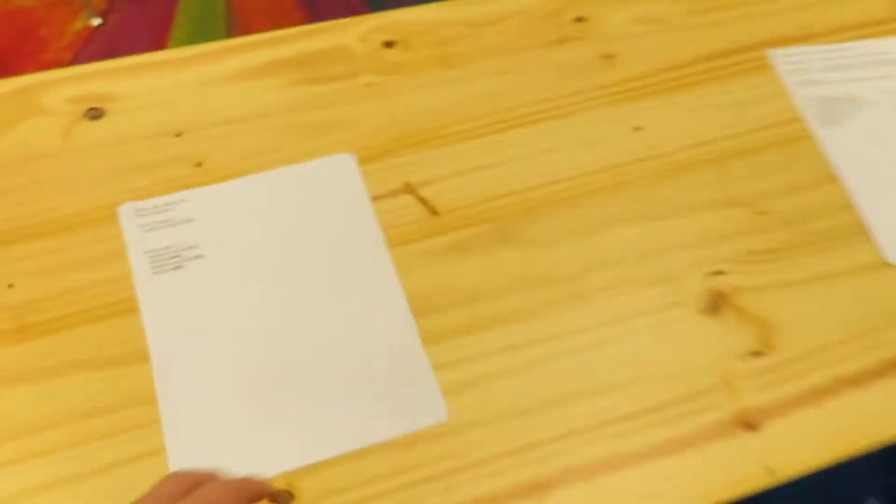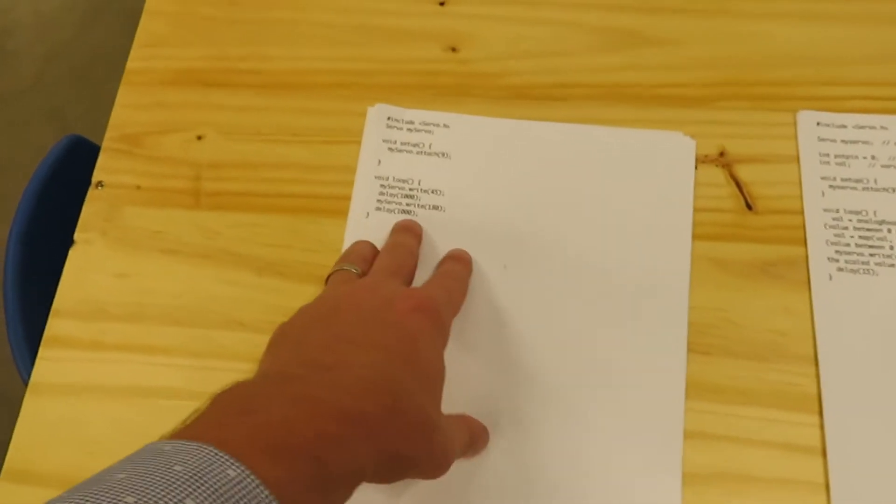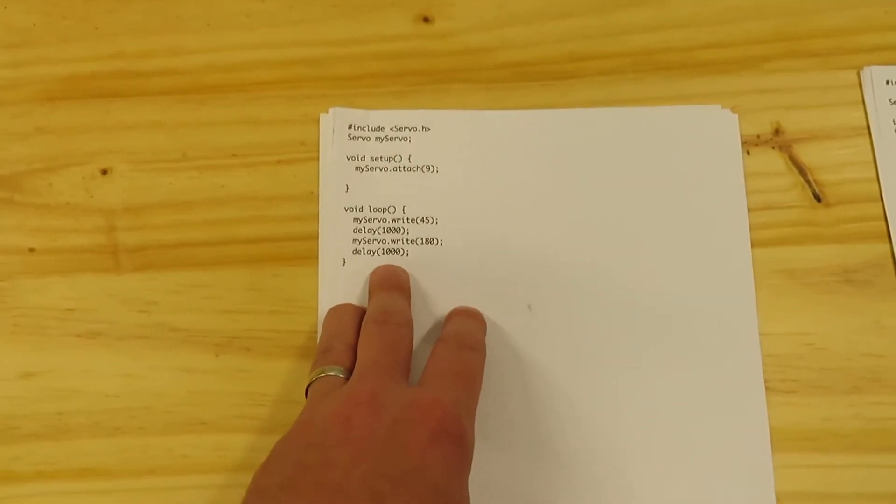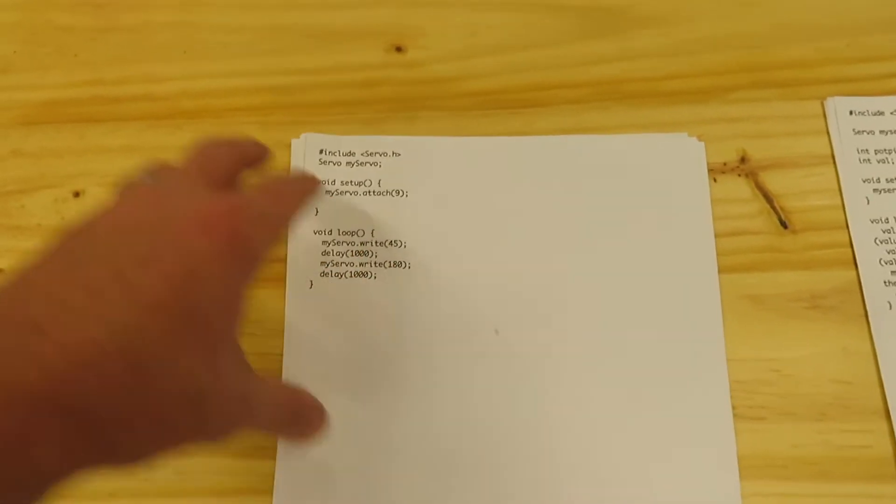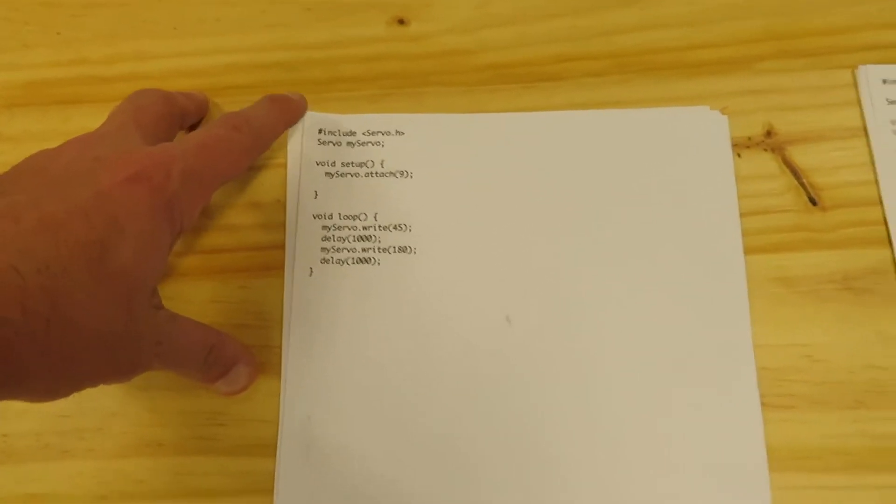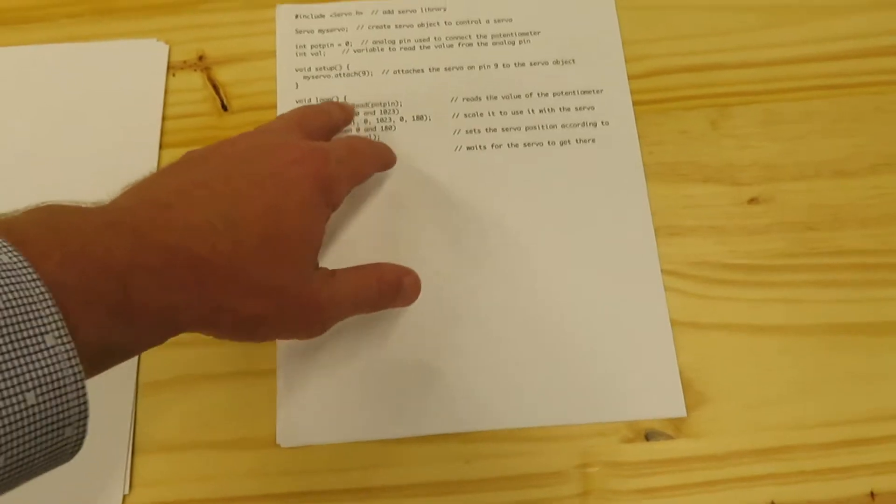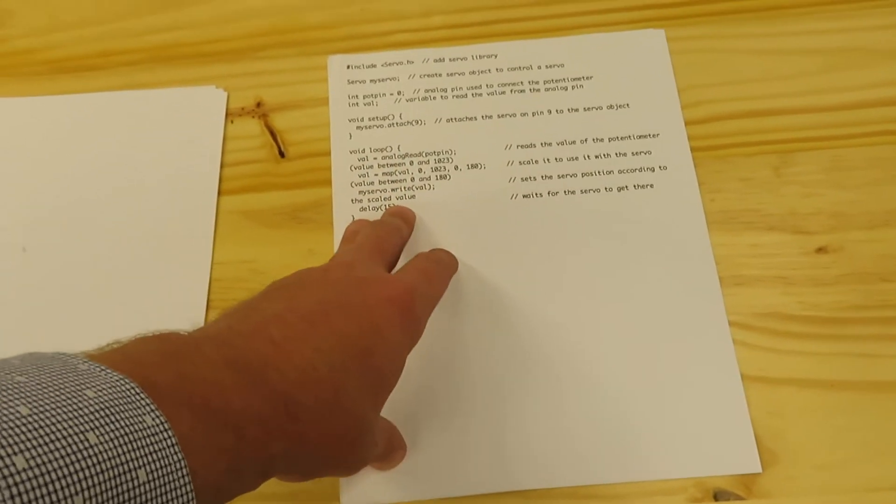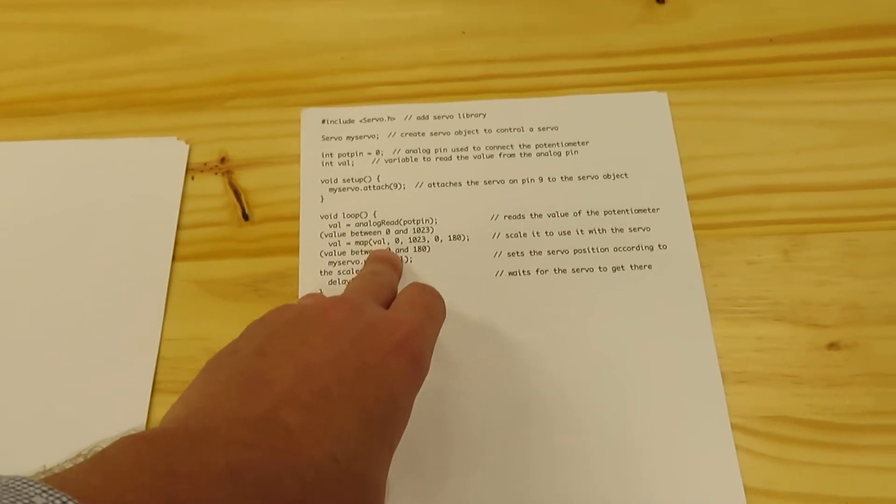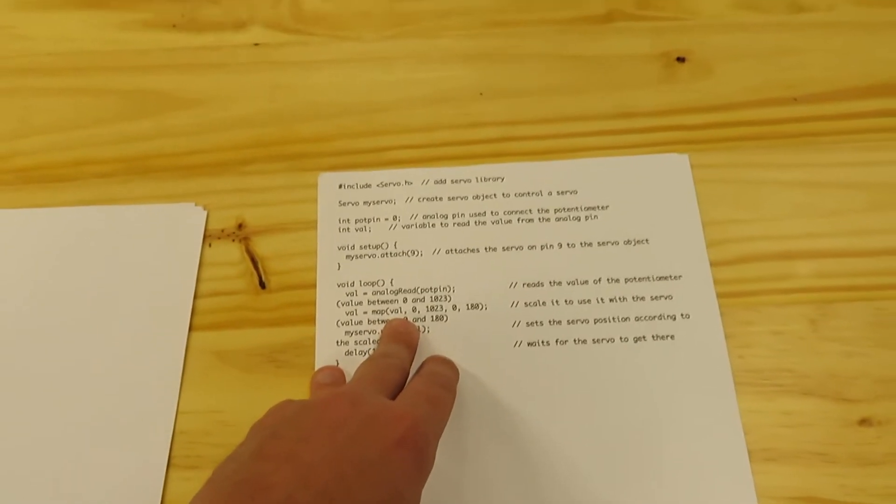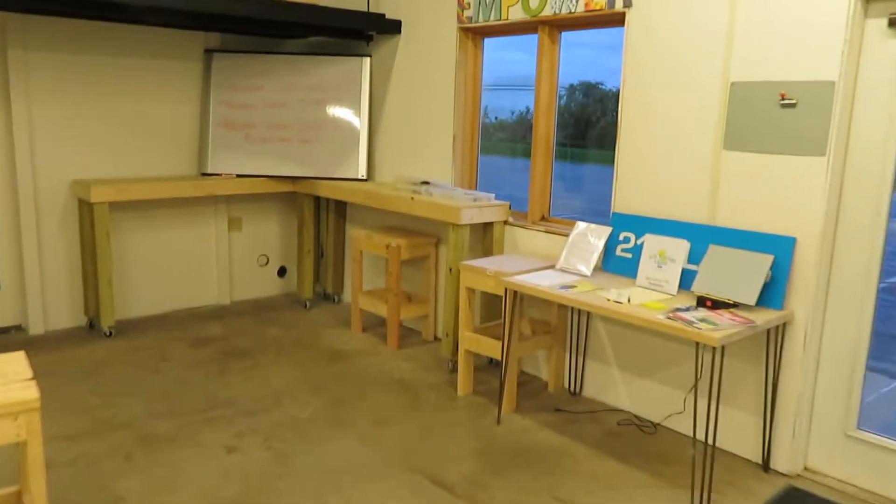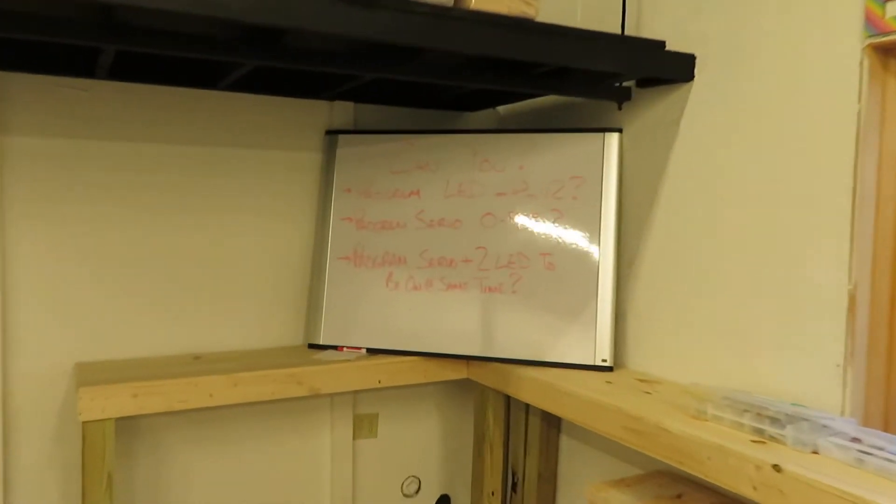Over here just really simple straightforward code because they need to understand how the communication language works. This is just real simple how to communicate to the server, we're going to talk about what is the library, what are cases and all that good jazz. And then here this is moving into the potentiometer because they're going to need some help with that, especially with the map code here, how we do scaling and converting.